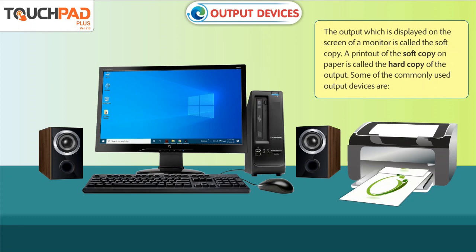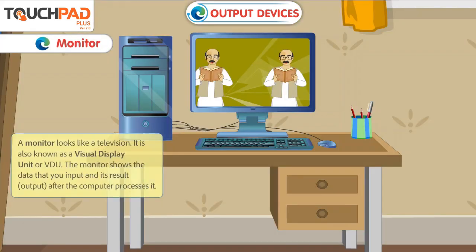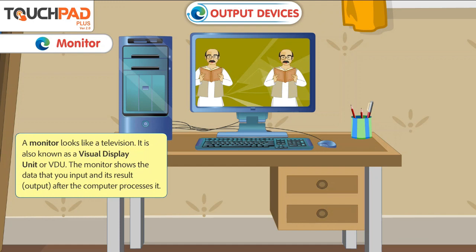Some of the commonly used output devices are: Monitor — a monitor looks like a television. It is also known as Visual Display Unit (VDU). The monitor shows the data that you input and its result output after the computer processes it.